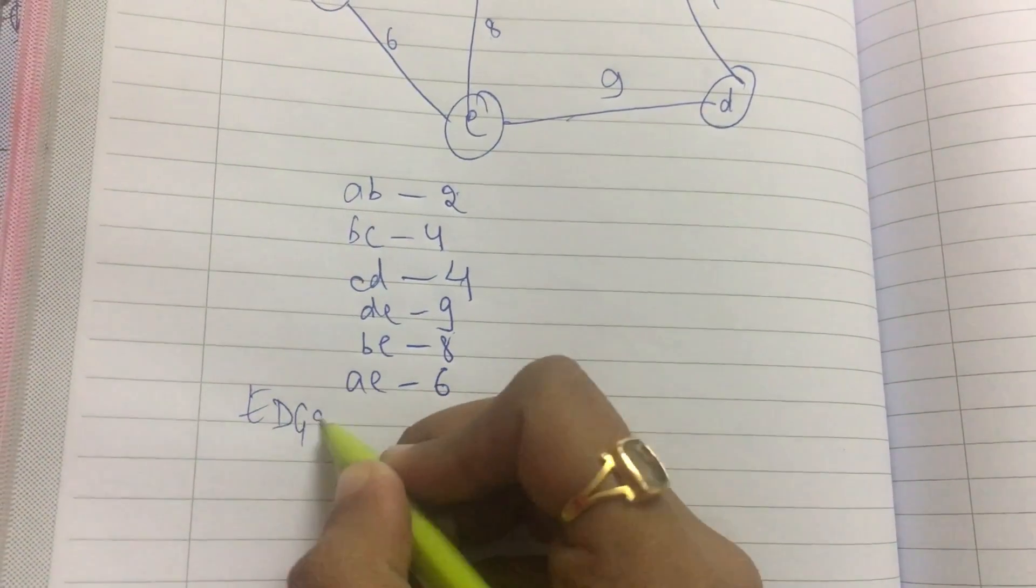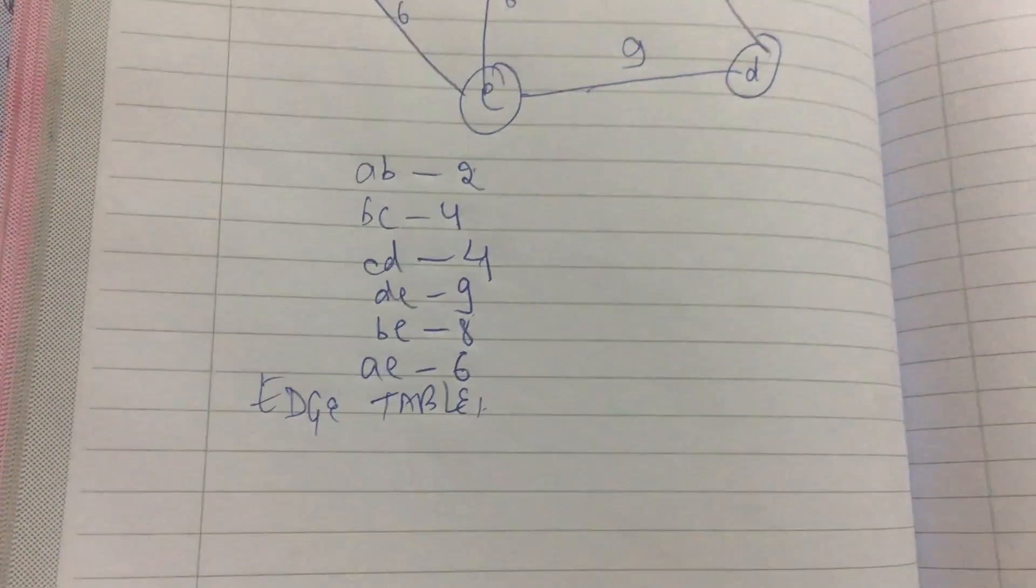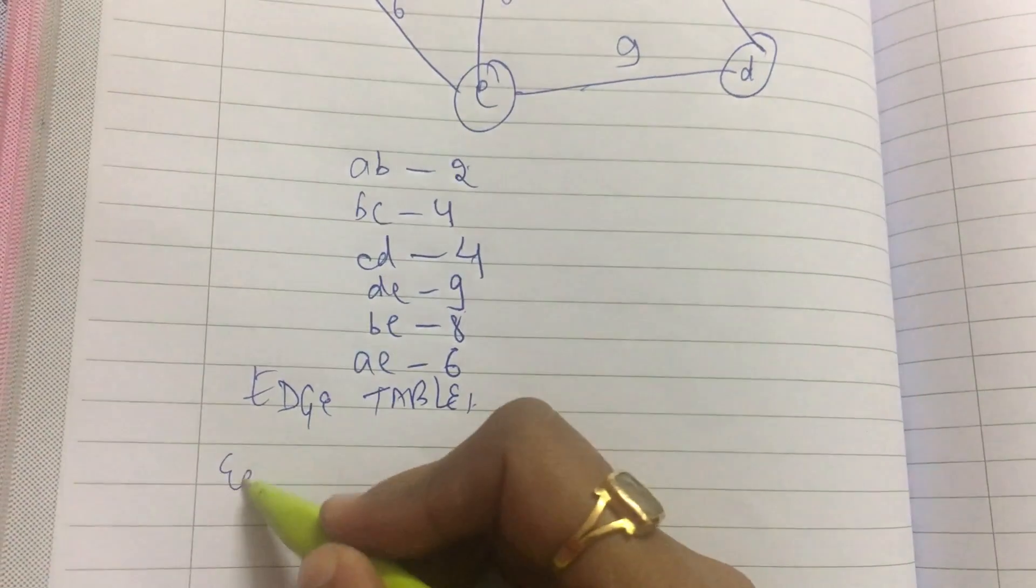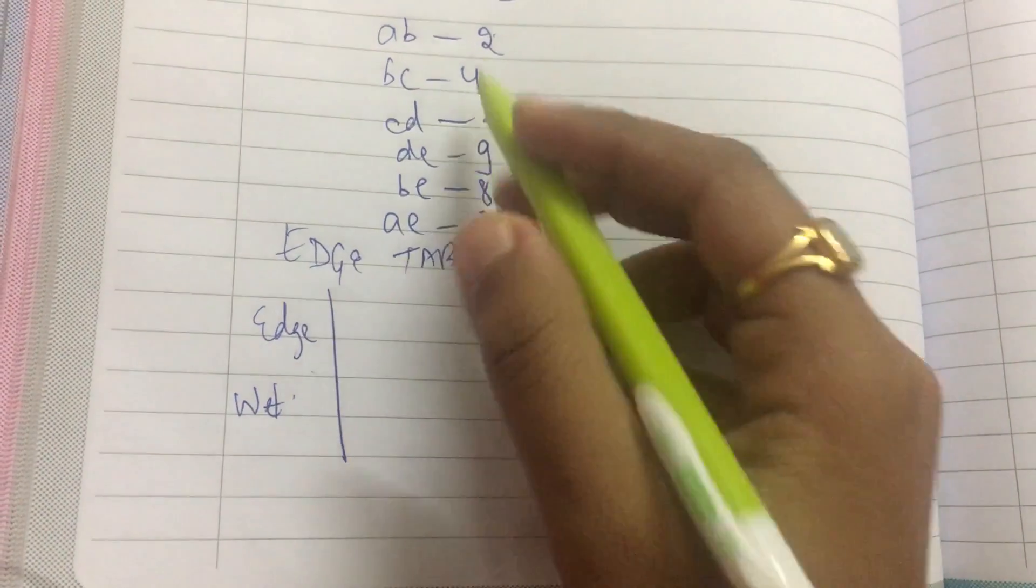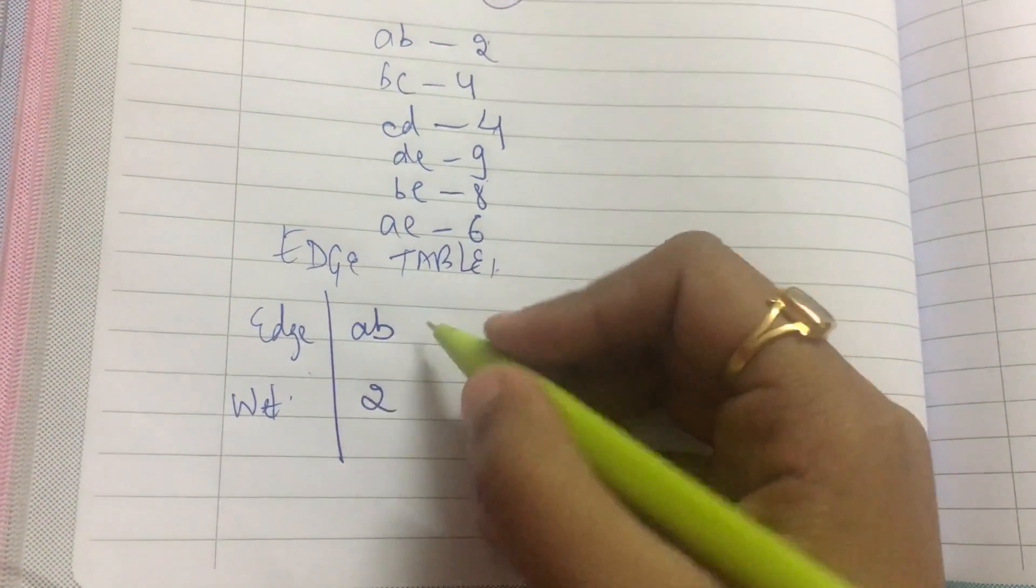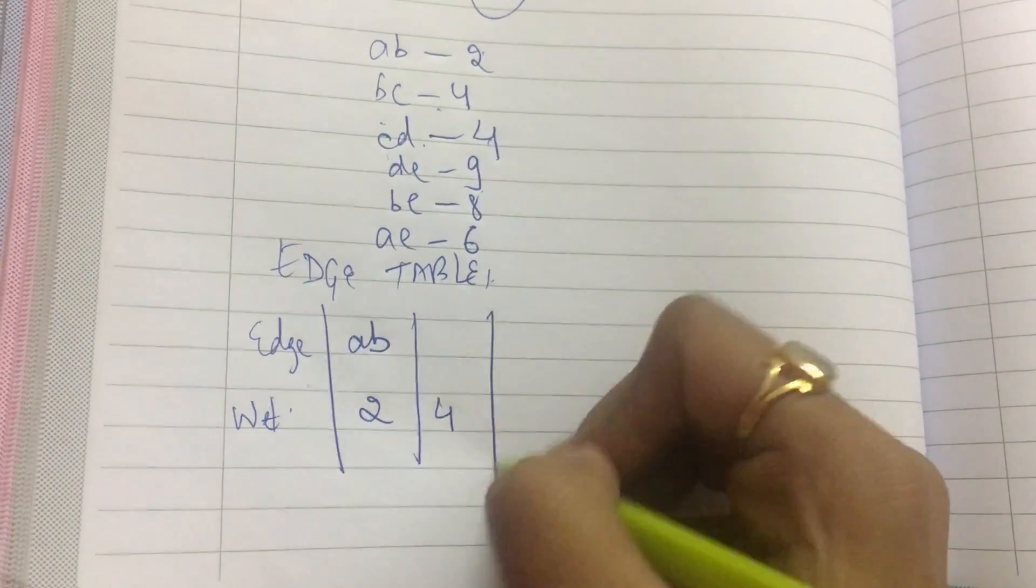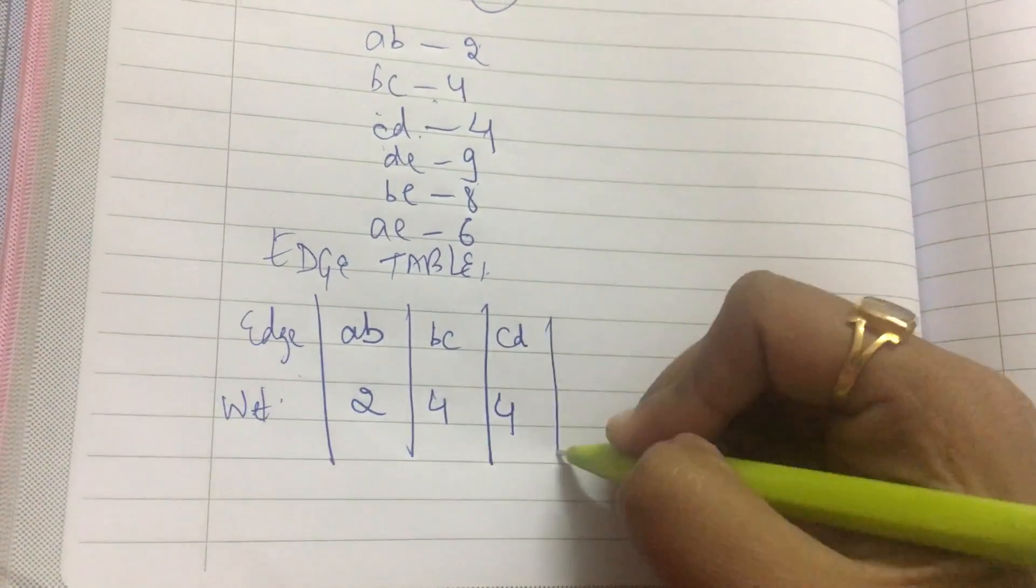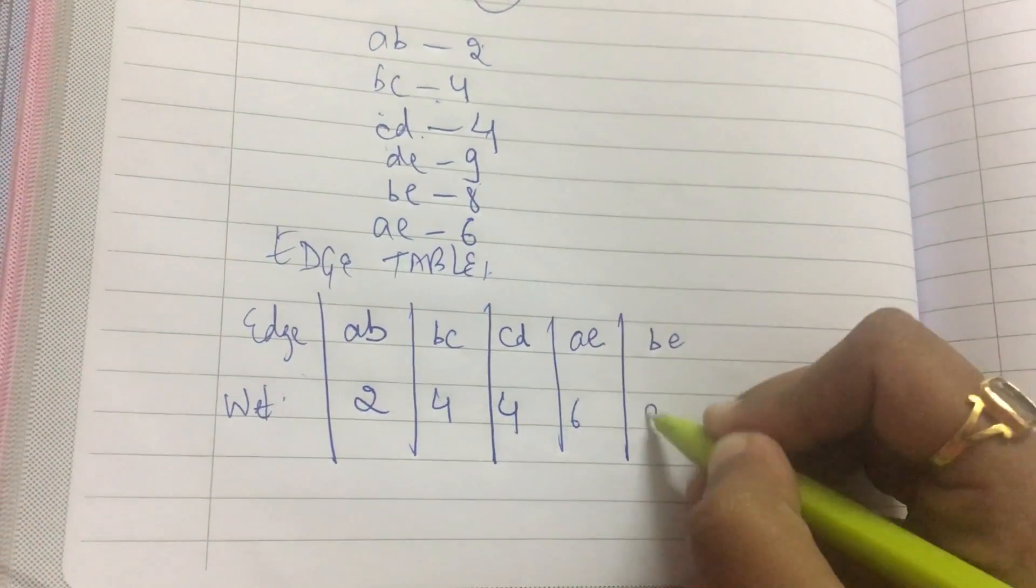Now I have to make an edge table in the increasing order of weights. That is, the smallest weight has to come in the front. This is my edge, this is my weight. The smallest one is 2, that is for AB. Then comes 4 for BC and CD, that is 4 each. Then comes AE that is 6, then comes BE that is 8, then comes DE that is 9.